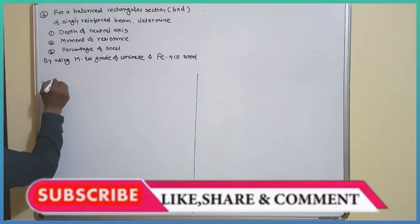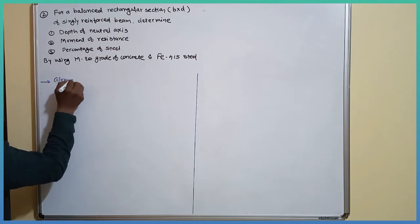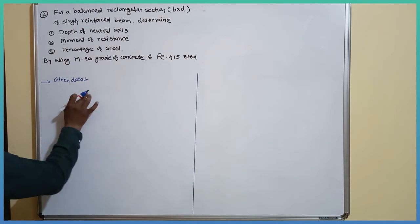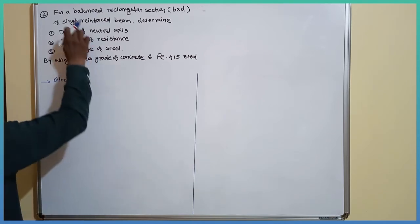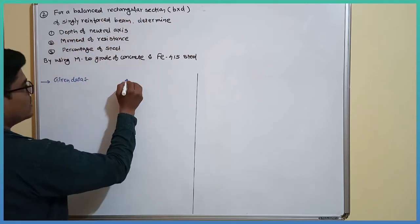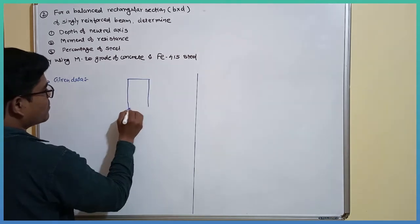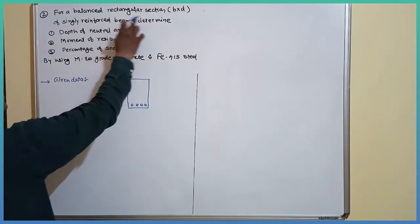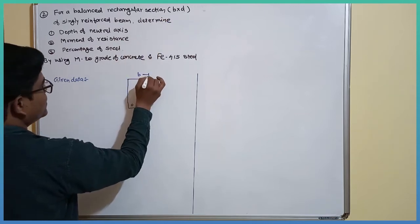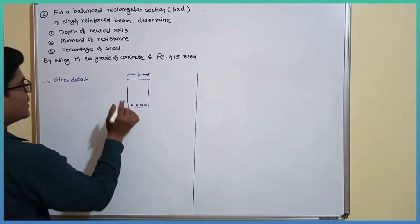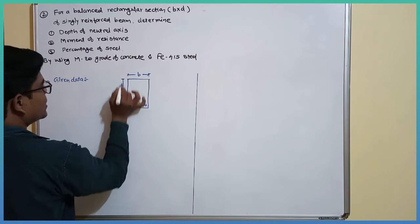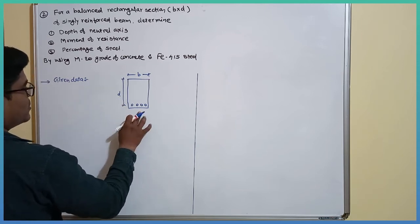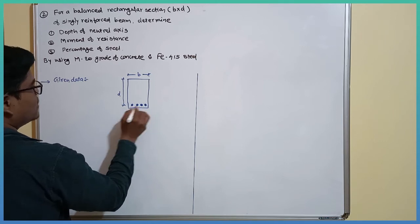First of all, we have to write the given data — whatever is given in the statement. They provide the balanced rectangular section, so I will draw here the balanced rectangular section having dimension B and small d, which is the effective depth of beam. This is the singly reinforced beam, so I will provide the reinforcement at the tension zone. This is the neutral axis.